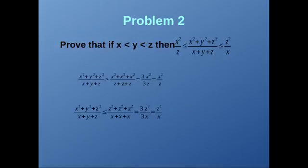The next problem: we have to prove that (x² + y² + z²) / (x + y + z) is less than z²/x and greater than x²/z, where x < y < z. Now we know that z² and y² are greater than x². Therefore, to decrease the numerator of the given fraction we substitute y² and z² with x², giving the numerator as 3x².